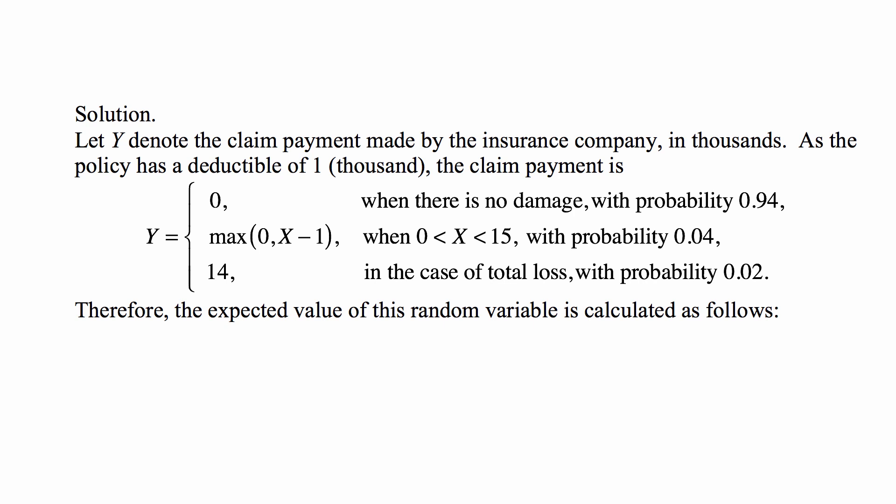Let Y denote the claim payment made by the insurance company in thousands. As the policy has a deductible of $1,000, the claim payment is 0 when there is no damage, and that happens with probability 0.94, which is 1 minus 0.04 minus 0.02.